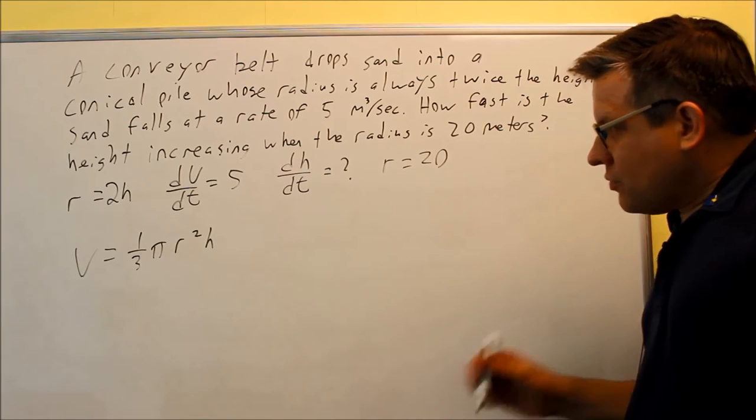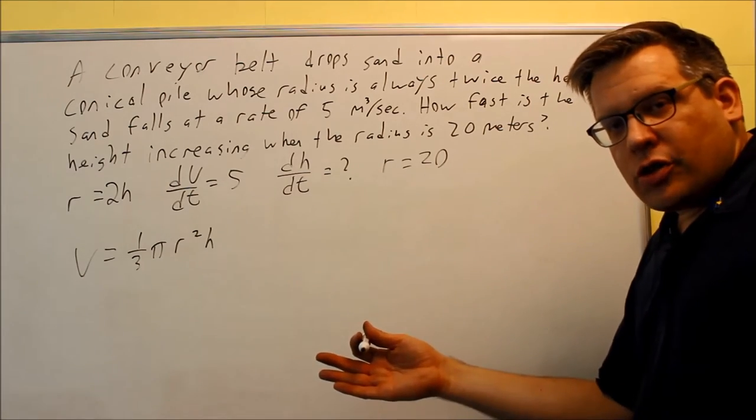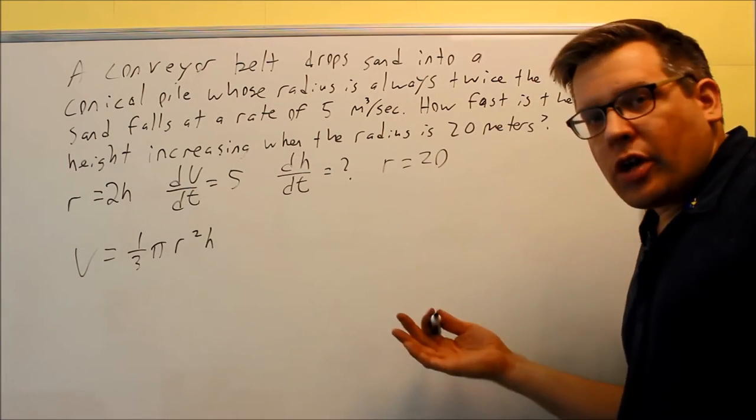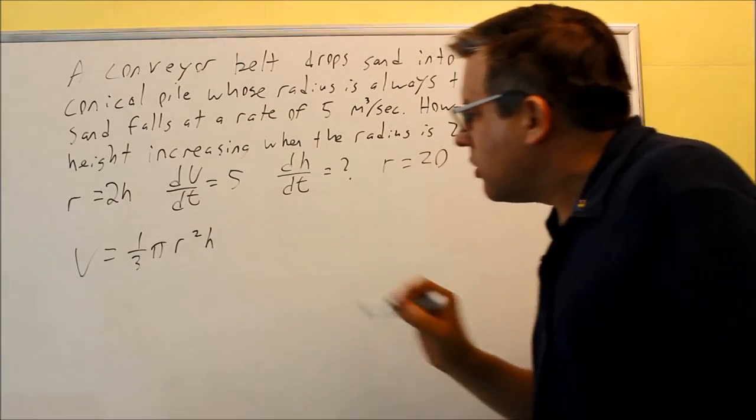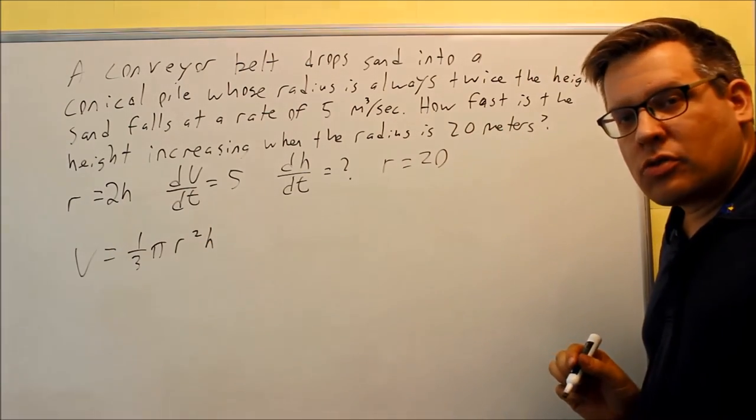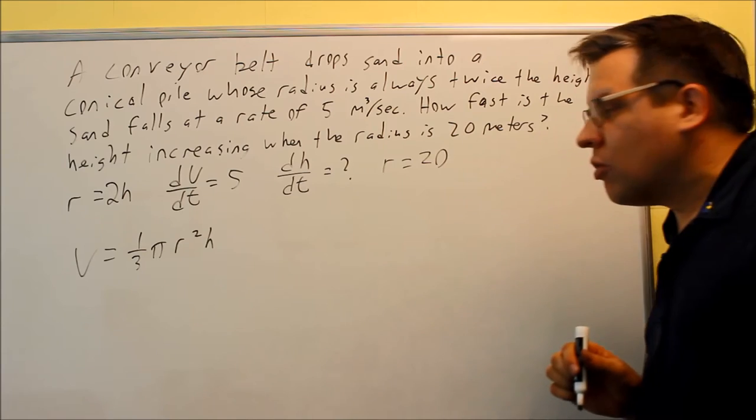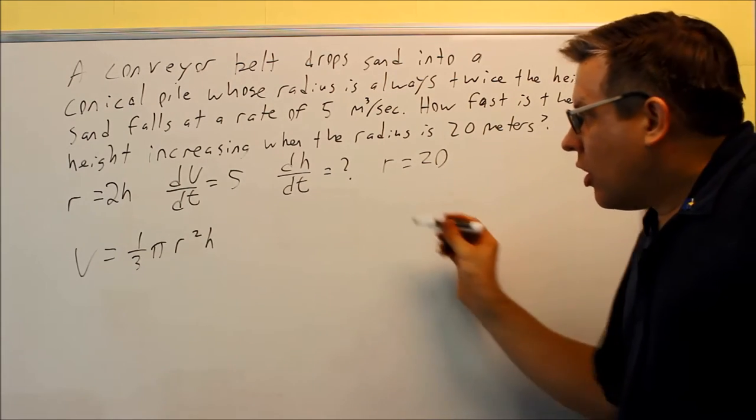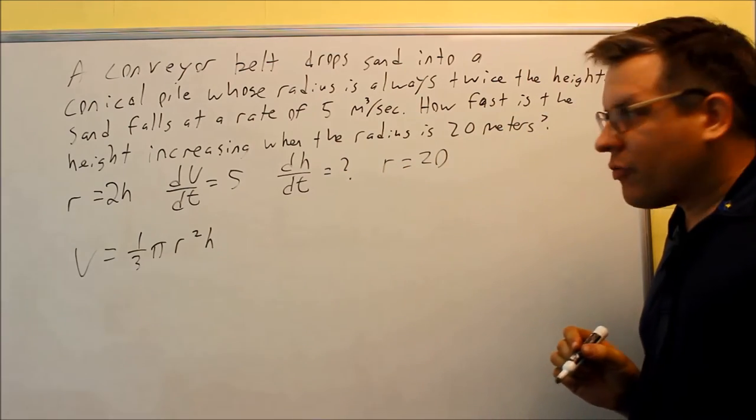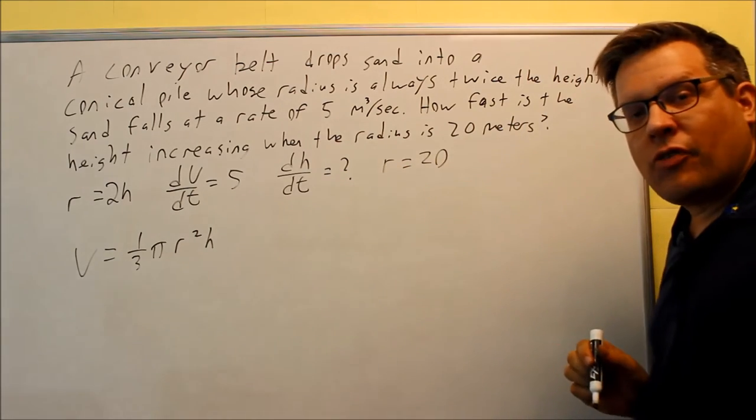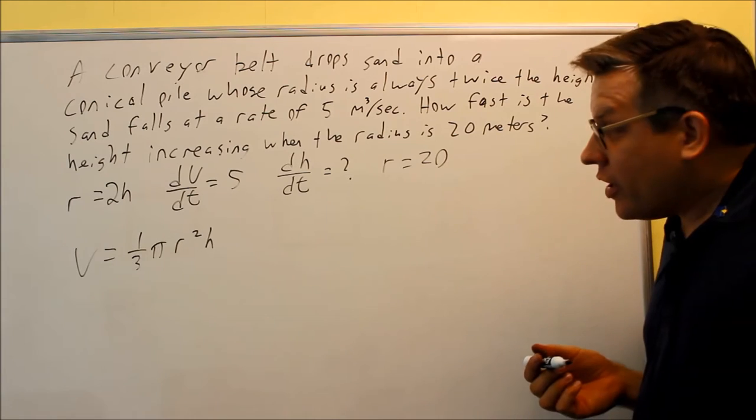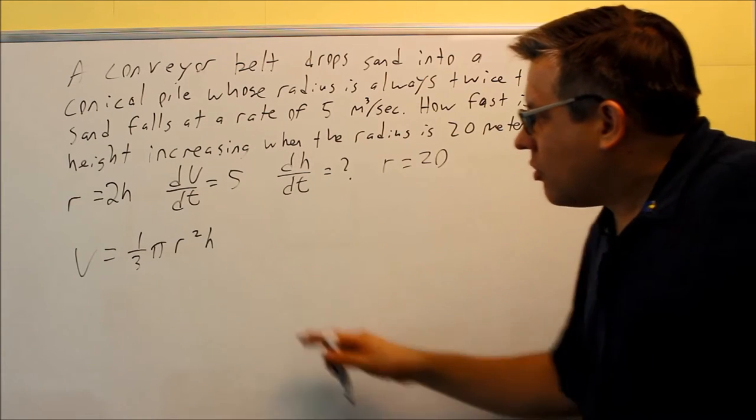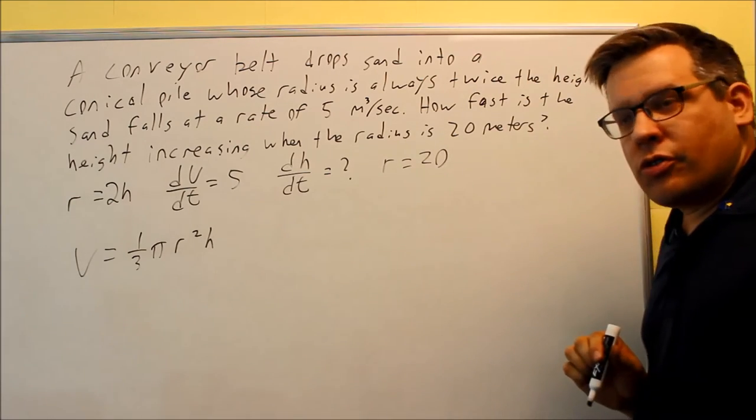So are we ready to do the derivative implicitly? Yeah, we could do that right now, but the problem is we have two different variables. So when I do that with the product rule, I'm going to end up having a dr/dt and a dh/dt. Well, dh/dt is what we're trying to solve for, and there is no information here provided in terms of the radius dr/dt. So let's think about if there's an easier way to do this.